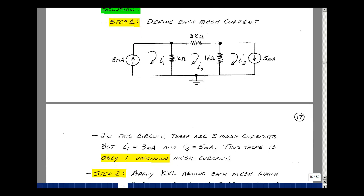Now in this problem, I can see that I1 is equal to 3 milliamps, and that I3 is equal to 5 milliamps. Although I've got three mesh currents here, I do know two of the three. I only have one unknown. I just have to write one equation to solve for that one unknown.